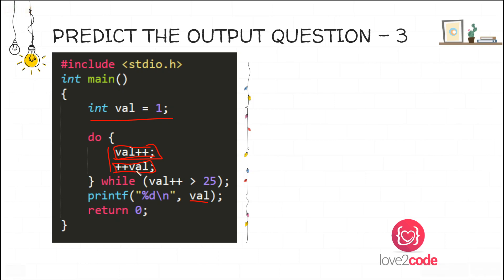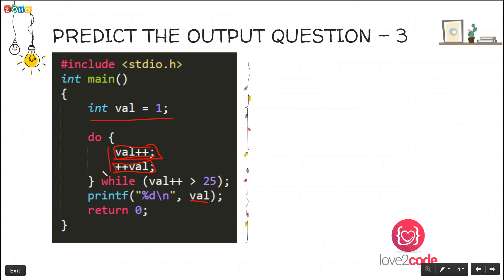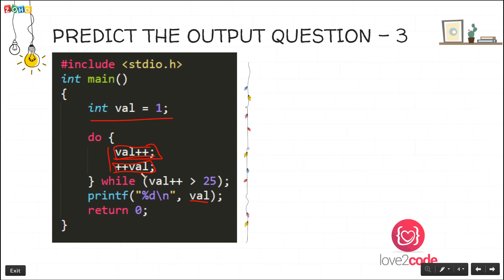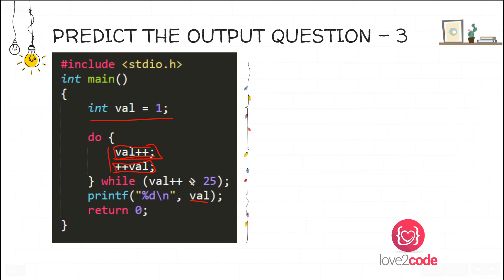For the pre-increment operator, before executing that line of code the value is incremented. So val is currently 2, and with pre-increment val becomes 3. After executing these two lines, we go to the while condition. Inside the while condition, val is post-incremented — so during the condition check the value used is 3, making it not greater than 25. After the check, val becomes 4, the condition is false, and we exit the loop. The expected output is 4.